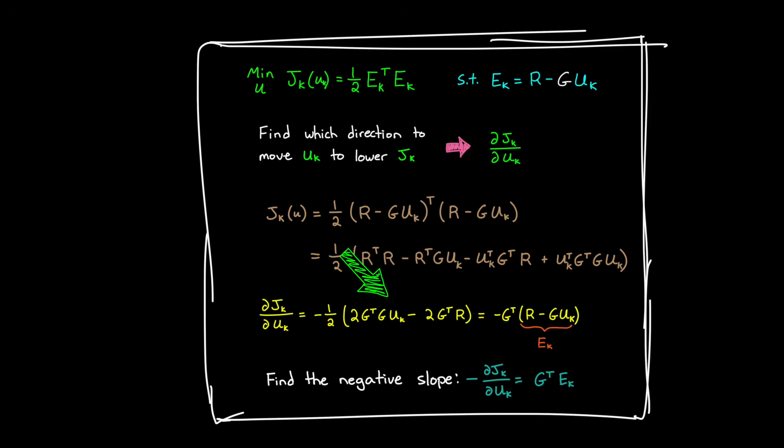And then you'll notice that we have this r minus gu term at the end here, which is just the error in the current iteration. So finally, we want the negative slope, which turns out to be g transpose times e_k.